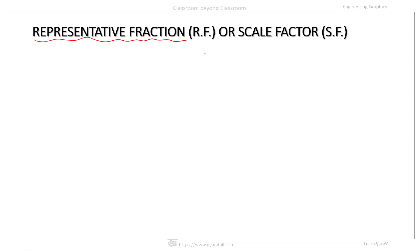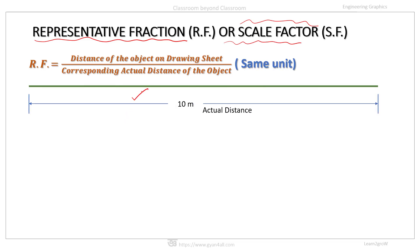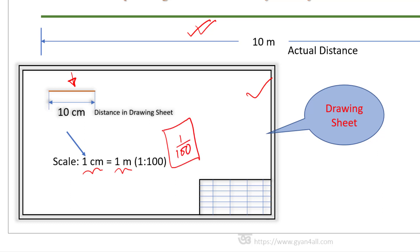Representative fraction is very important for construction of scale. It is also called scale factor, or simply the scale. Representative fraction is defined as the ratio of the length of the object on the drawing sheet to the corresponding actual length of the object. For example, if 10 meters is the actual length and we represent it by a 10-centimeter line on the drawing sheet, then the RF is 1 centimeter equals 1 meter, or 1/100. This is the RF, representative fraction, or scale factor.